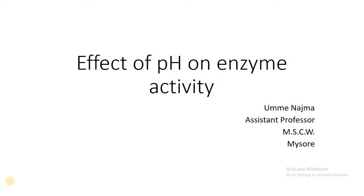Dear students, today we are going to discuss the effect of pH on enzyme activity. In previous classes we discussed how enzymes work: the enzyme binds to the substrate to form the enzyme-substrate complex, which is then converted into the enzyme-product complex, the product is released, and the enzyme is ready to take up new substrate. This enzyme-substrate complex is influenced by various factors. Temperature was discussed in another video; the second factor is the effect of pH.